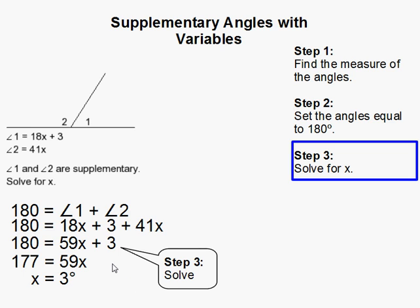Now depending upon your teacher or your book, you might have to go one step further and take the 3 and substitute it back into here to find the original angles. For example, if I was to take this 3 and substitute it back in angle 2, that would give me 123 degrees for this angle here.